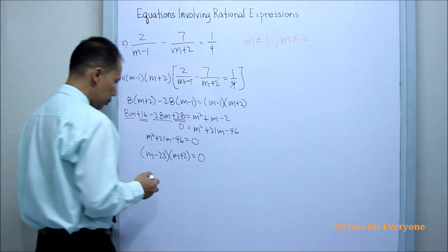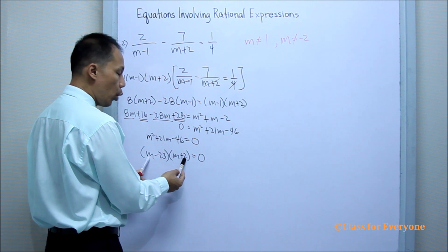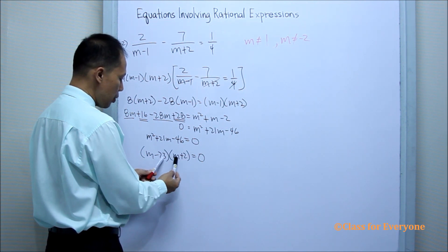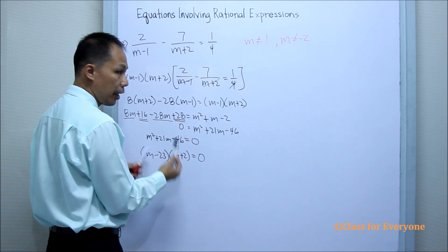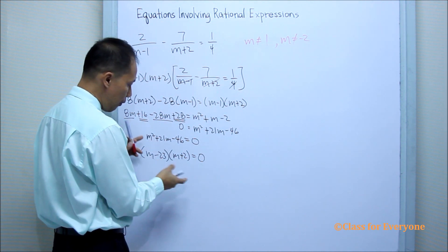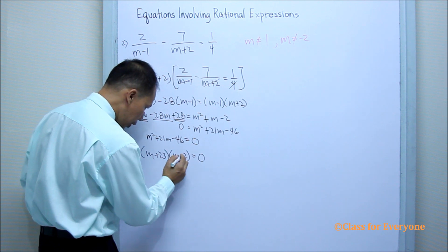Then let's check if my factors are correct. m times m is m squared. m times positive 2 is 2 m. Negative 23 times m is negative 23 m. Plus 2 m is negative 21 m. So therefore, my factors have a different sign. So we'll check this sign. This will be positive. And this must be negative.